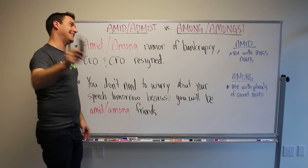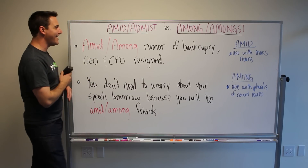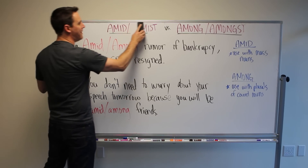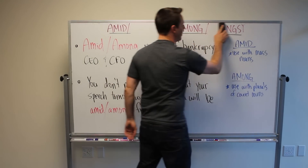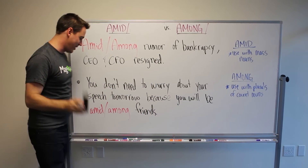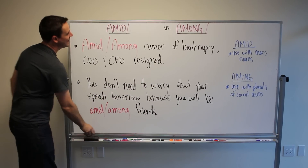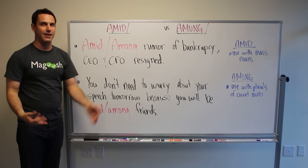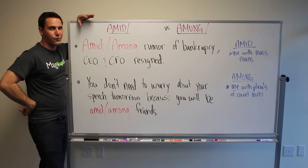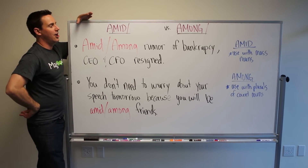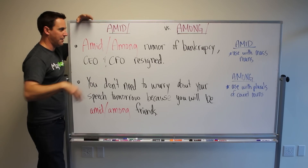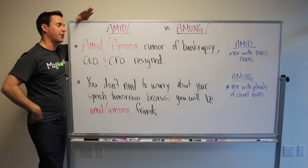Let's simplify things. On the GMAT, you do not want to use 'amidst' and you don't want to use 'amongst.' Just don't even use them — those are not going to be correct. It's a very outdated, overly formal usage. They do mean the same thing, but really no one uses them.